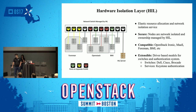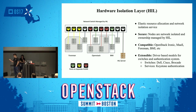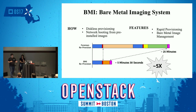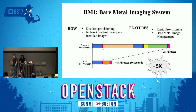To achieve this, we developed two services. The first is the Hardware Isolation Layer — a shimming layer at the network layer providing elastic resource allocation and network isolation. It is compatible with any provisioning solution, whether HPC or OpenStack environments. The second is the Bare Metal Imaging system — BMI — which does diskless provisioning and network booting from pre-installed images, providing rapid provisioning and the image management benefits of virtual machines to bare metal systems.